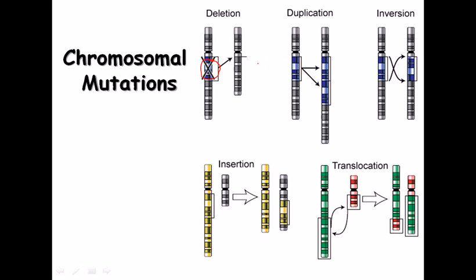Duplication means the addition of a stretch of nucleotides — a region of the chromosome is added to the existing chromosome, so that region is duplicated and the chromosome length increases. As a result, the gene is expressed at a much greater level than before, which can lead to dangerous effects. In our body, everything operates within a tightly controlled range — too high or too low can cause trouble.